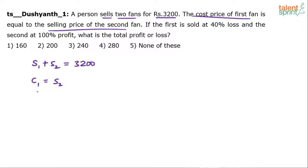The first fan is sold at 40% loss. From your knowledge of profit and loss, if an item is sold at 40% loss, then S1 equals 0.6 times C1. That is, the selling price is only 60% of the cost price, and 60% is nothing but 0.6.